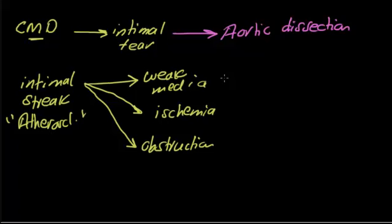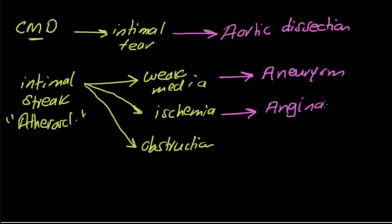Here are the diseases: First, if there is weakness in the media, you will have aneurysm, which is abdominal aortic aneurysm. If there is ischemia to the heart tissue, you will have angina. If the blood vessel is totally occluded, you will have MI, whether subendocardial or transmural MI.